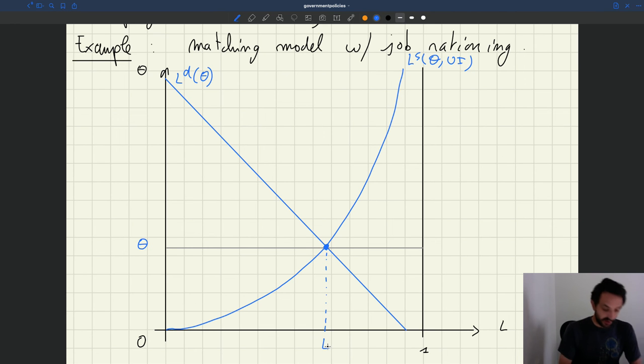All right, so now the question is, what happens if UI goes up? What will be the effects? So if UI goes up, we'll have to look at what happens to the labor demand. But here, because we assume that labor demand doesn't depend on UI, labor demand remains the same.